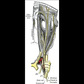On emerging from the brain, the nerve is invested with a sheath of pia mater and enclosed in a prolongation from the arachnoid. It passes between the superior cerebellar artery below and the posterior cerebral artery above, then pierces the dura mater anterior and lateral to the posterior clinoid process, passing between the free and attached borders of the tentorium cerebelli.